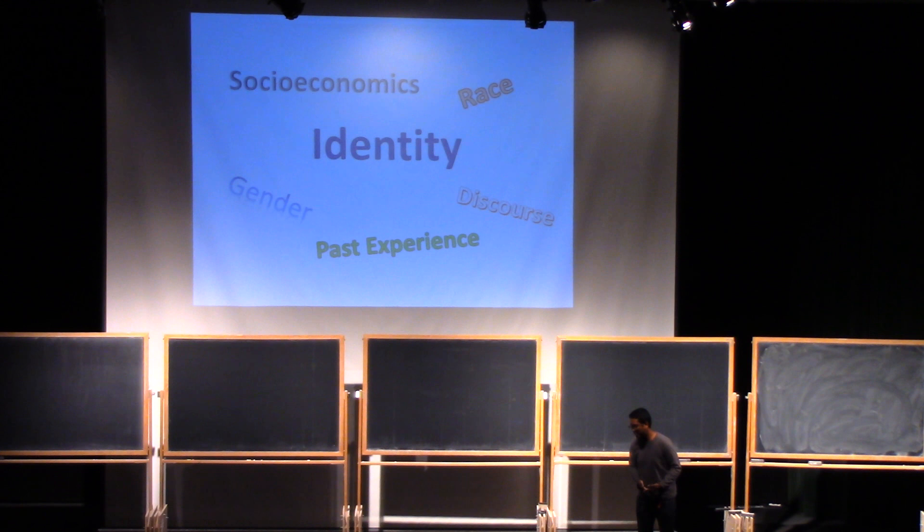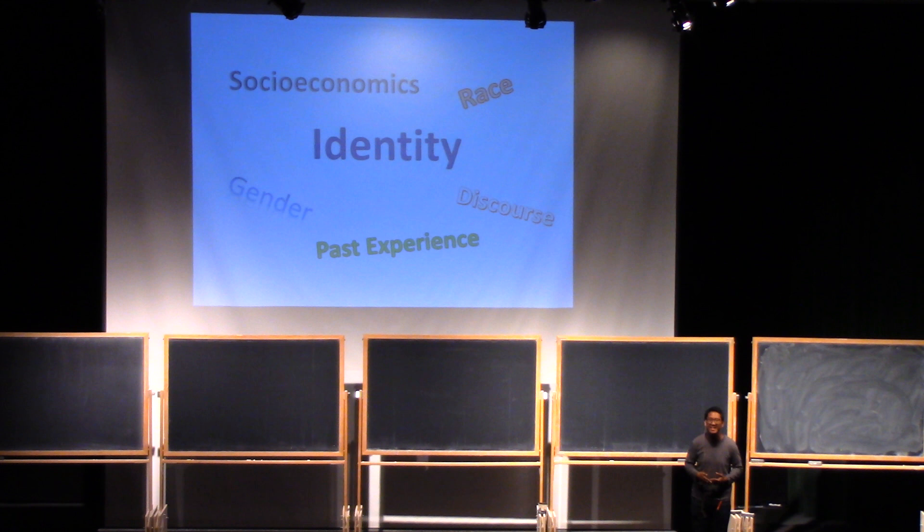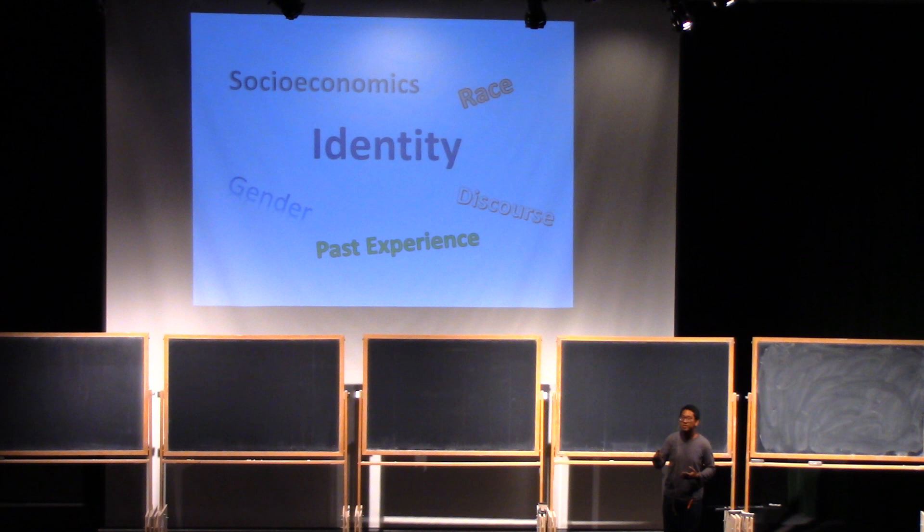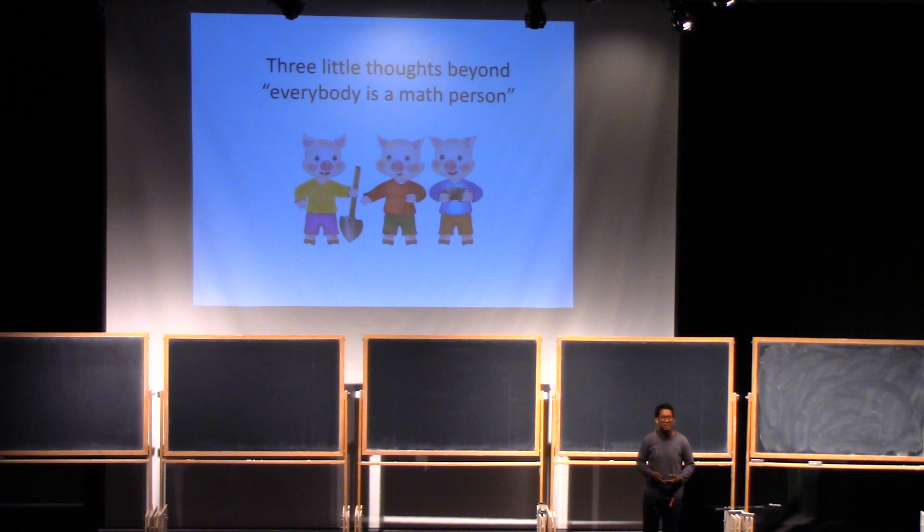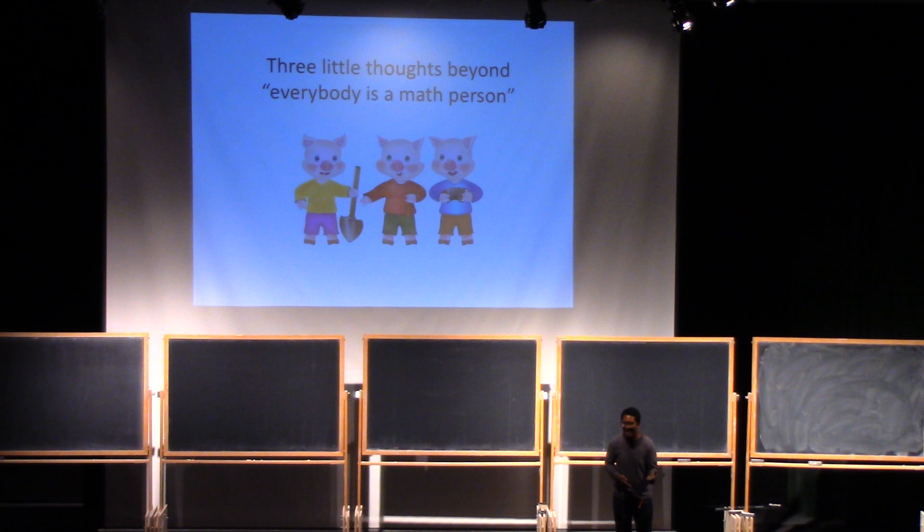First, we have to acknowledge that how students come to their mathematical identities is complicated. And it's deeply tied in with issues such as gender and with race. And because of this complexity, I believe we have an obligation to read about and think critically about the relationship between mathematics and self.